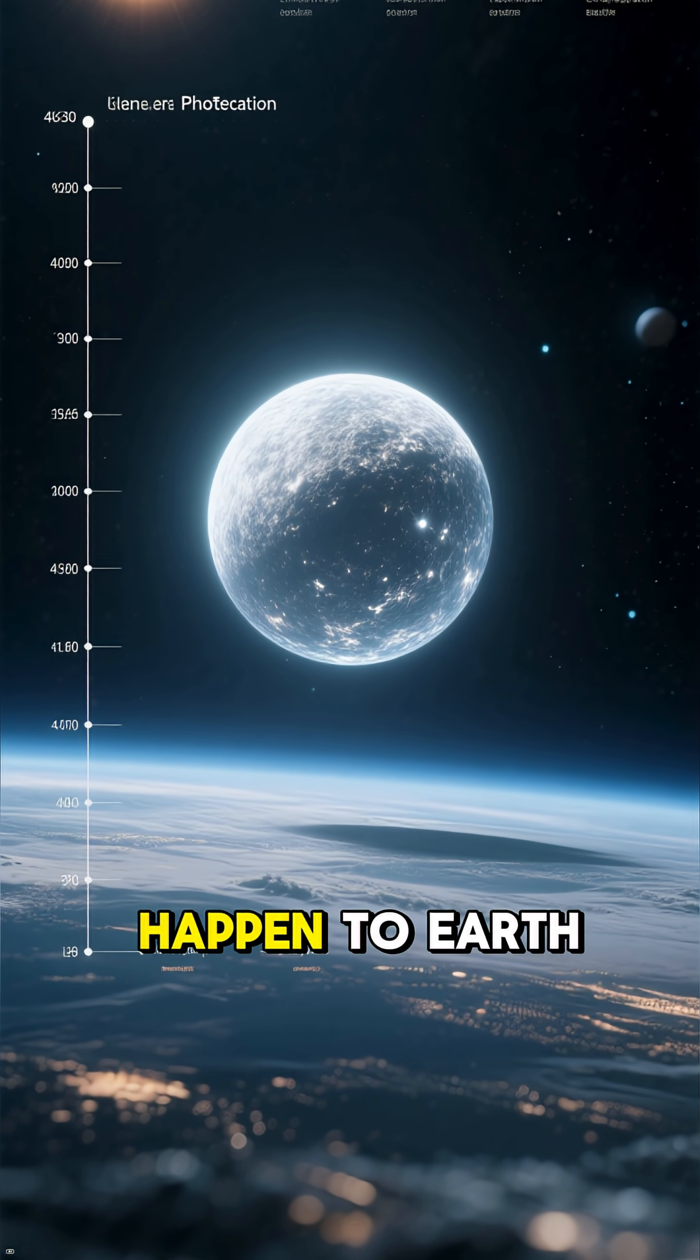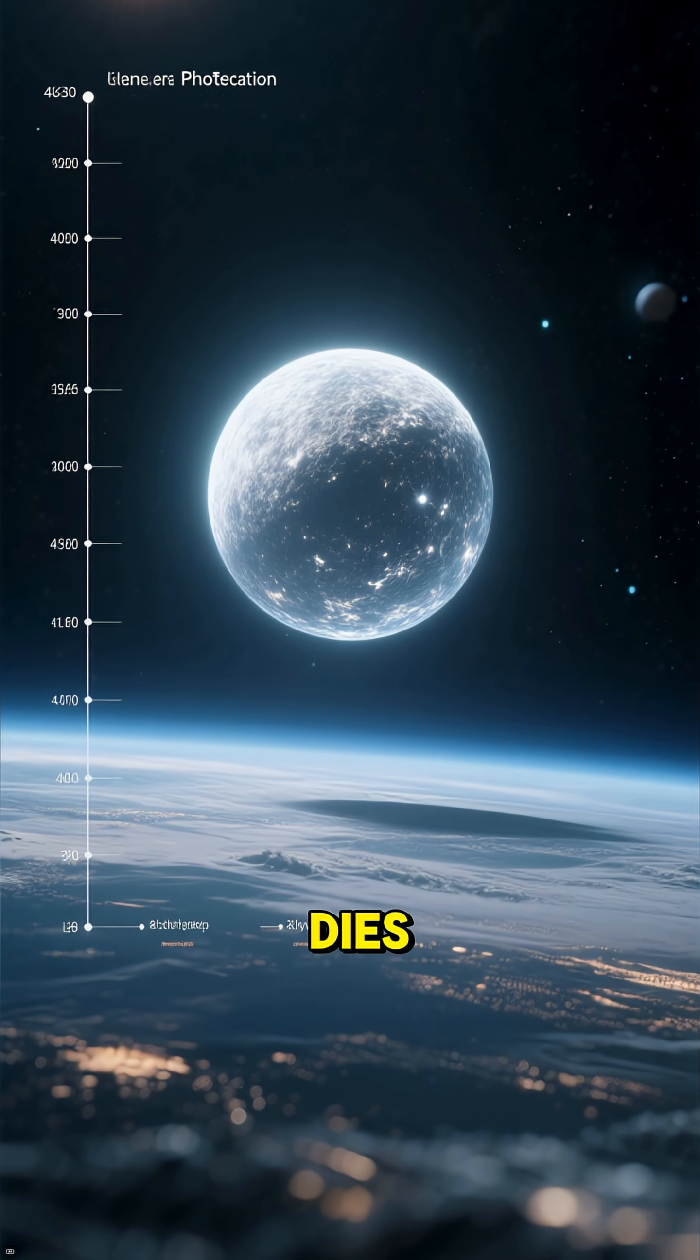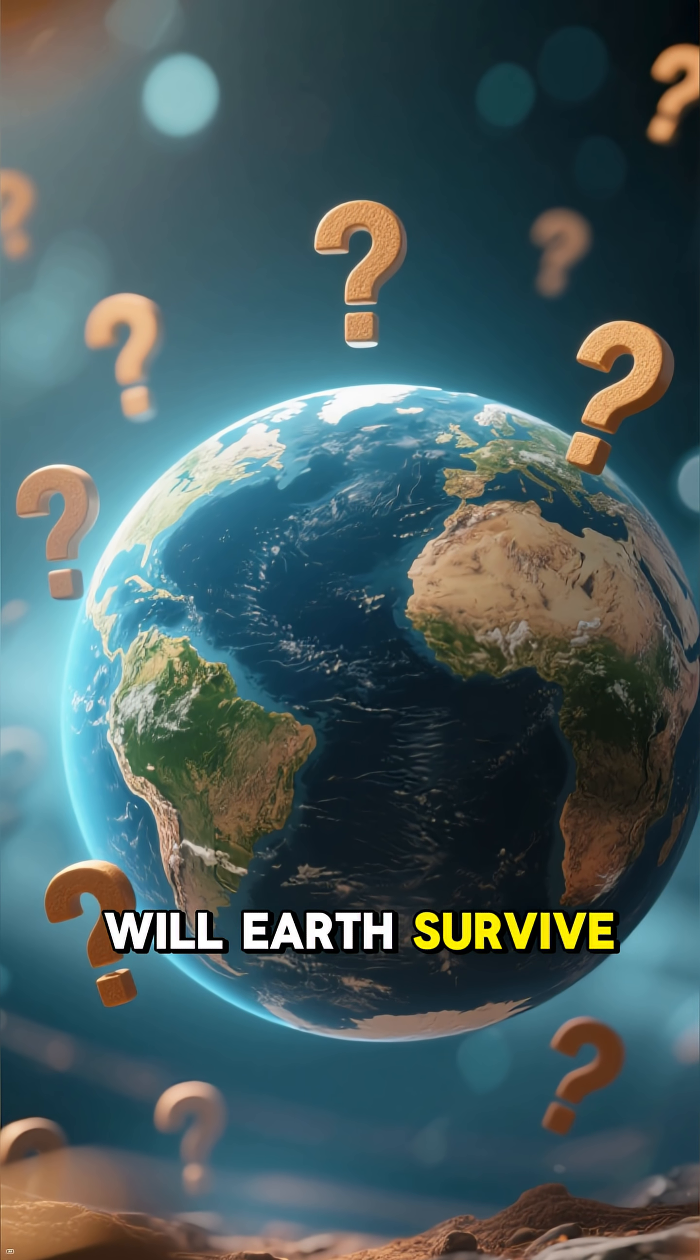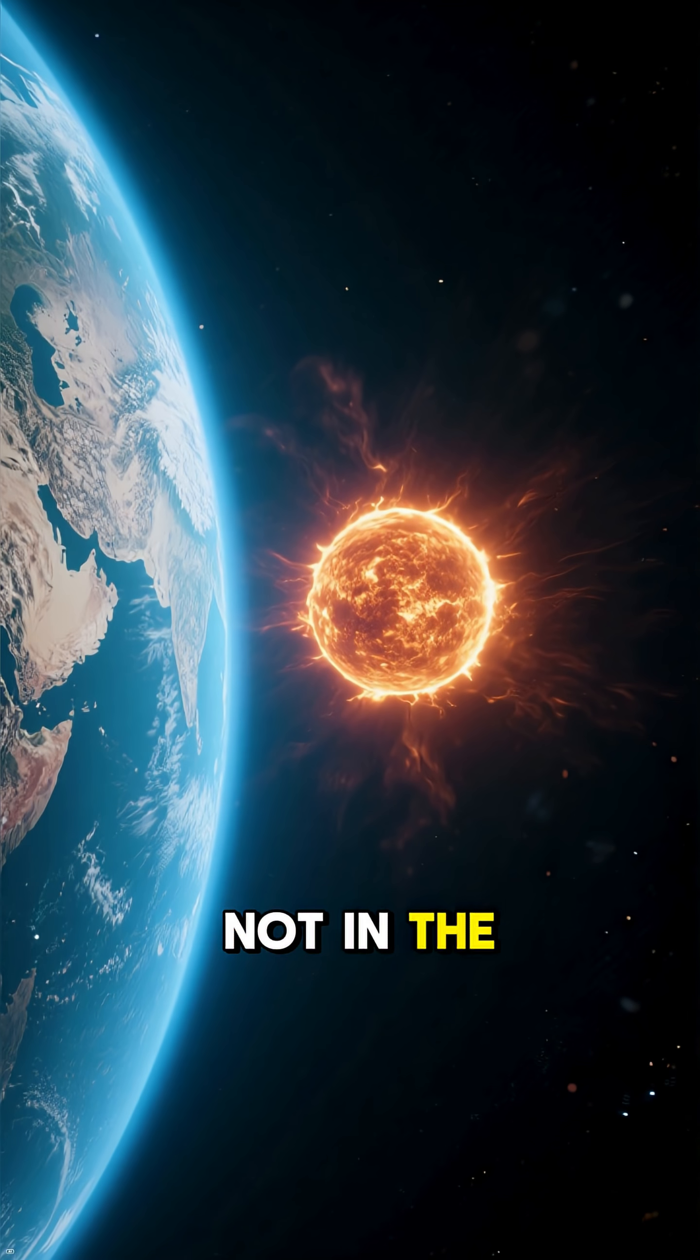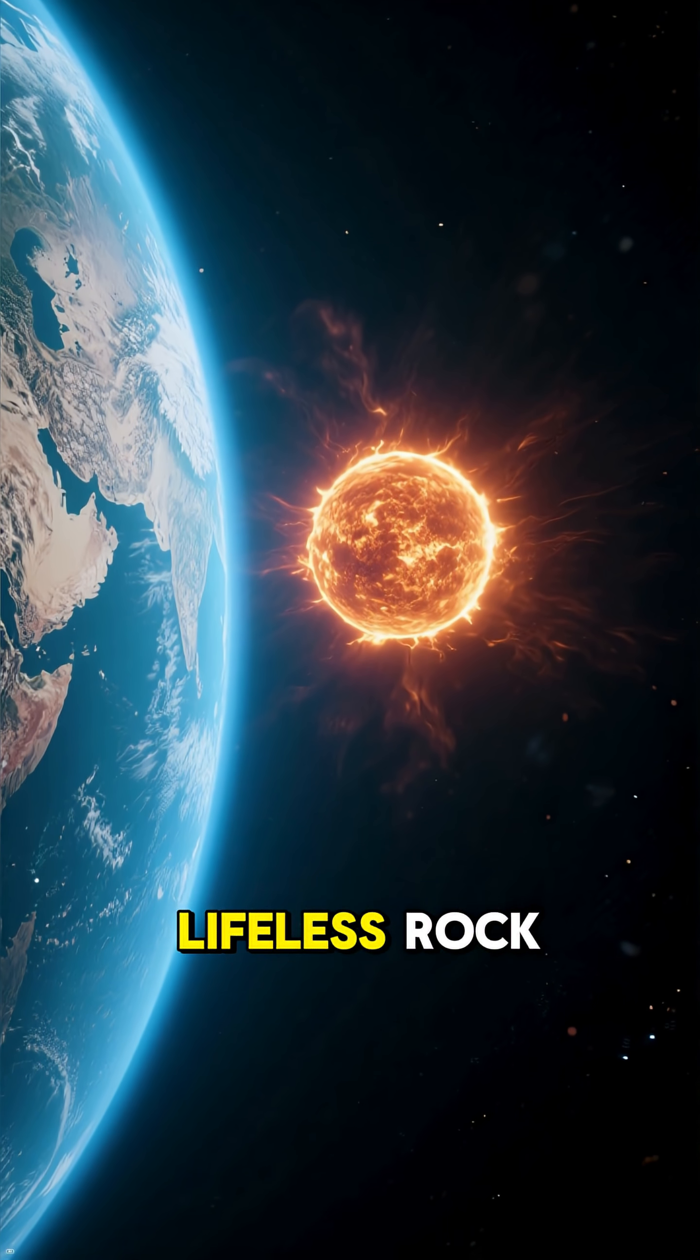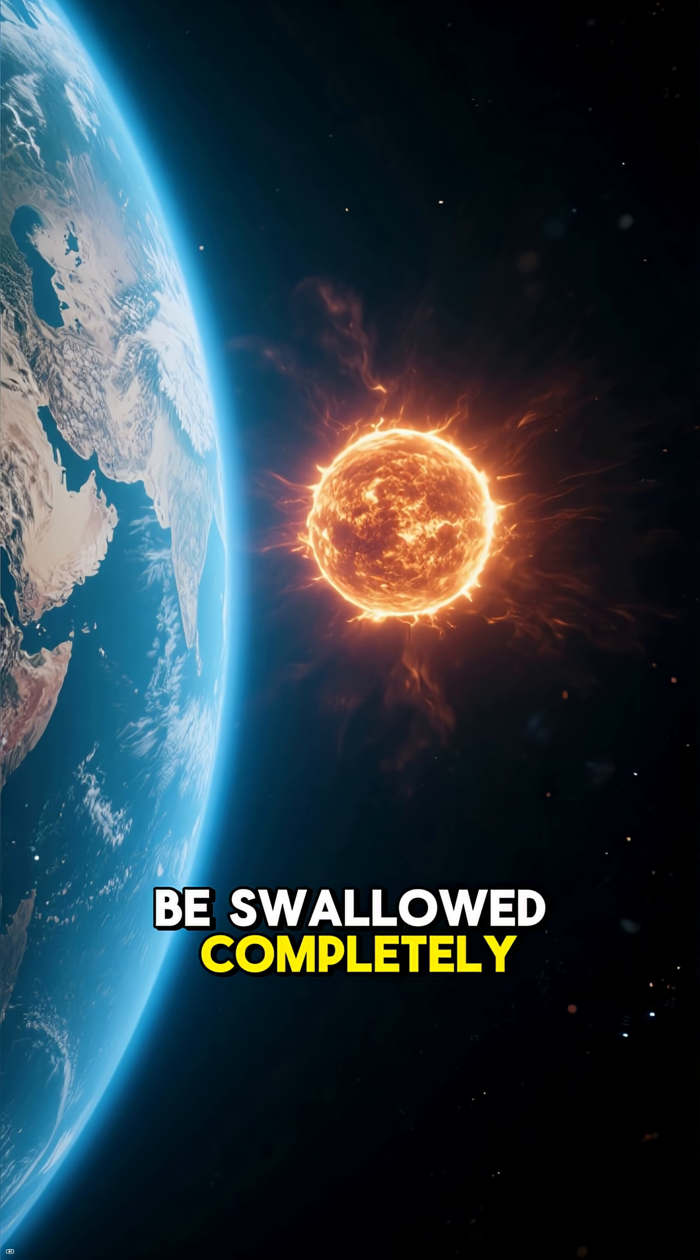So now you know what will happen to Earth when the Sun dies. But there's still one question left unanswered. Will Earth survive the death of the Sun? Not in the way we know it. The planet itself may linger as a scorched, lifeless rock, or it may be swallowed completely.